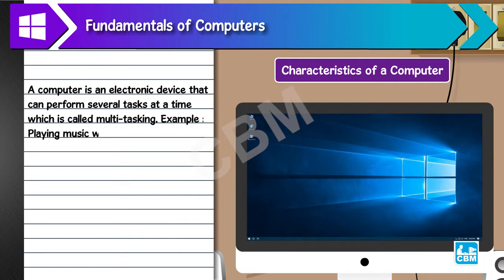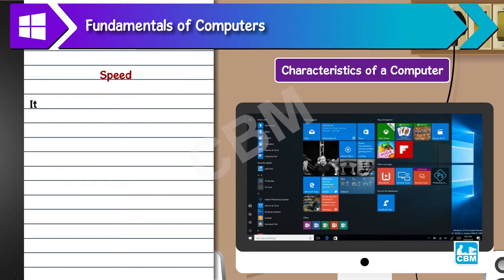Example: playing music while typing a letter. The characteristics of a computer are Speed: It can process data at a speed of more than 50 million instructions per second.